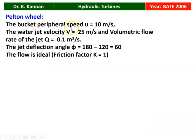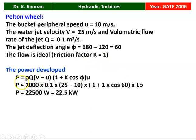For the Pelton wheel: bucket peripheral speed U = 10 m/s, water jet velocity V = 25 m/s, volumetric flow rate Q = 0.1 m³/s. The jet deflection angle φ = 180 − 120 = 60 degrees. Since the flow is ideal, friction factor K = 1. Power developed = ρQ(V − U)(1 + K·cos φ)·U = 1000 × 0.1 × (25 − 10) × (1 + cos 60°) × 10 = 22,500 watts = 22.5 kilowatts.